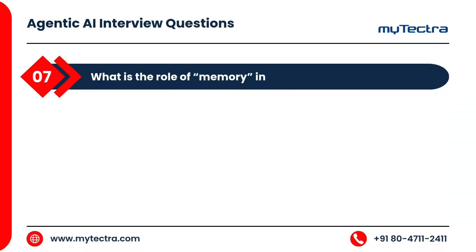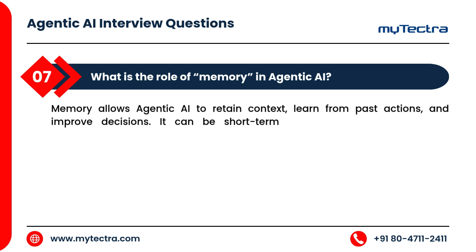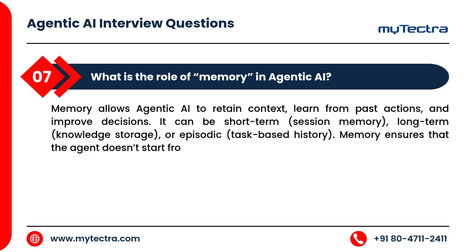What is the role of memory in agentic AI? Memory allows agentic AI to retain context, learn from past actions, and improve decisions. It can be short-term (session memory), long-term (knowledge storage), or episodic (task-based history). Memory ensures that the agent doesn't start from scratch every time it operates.